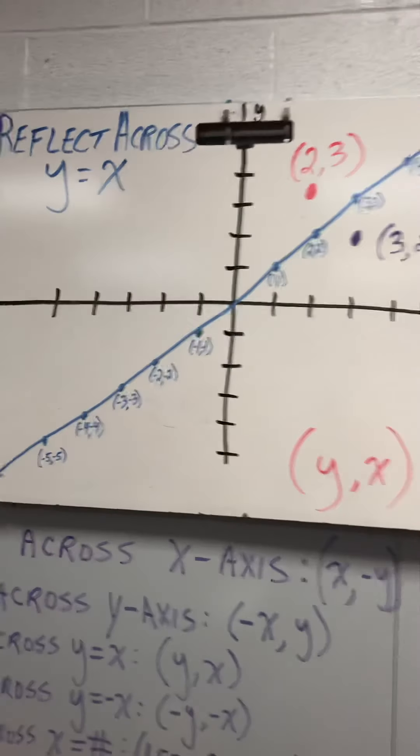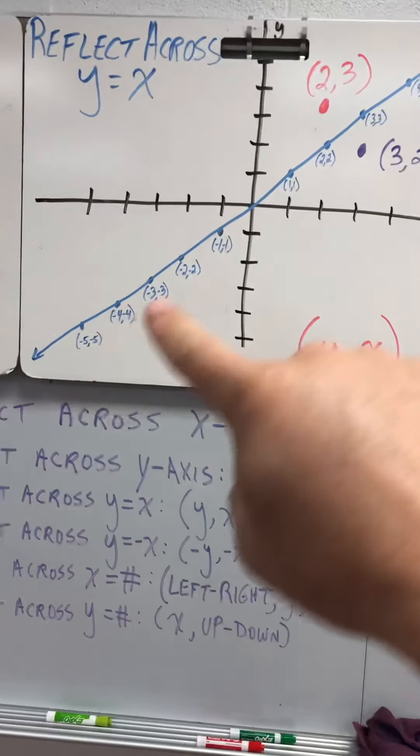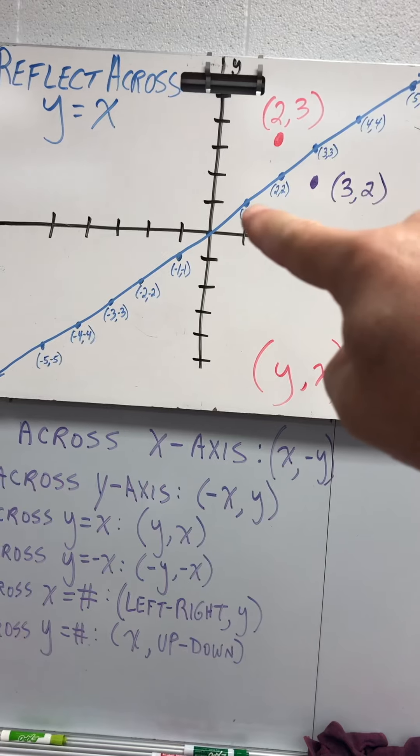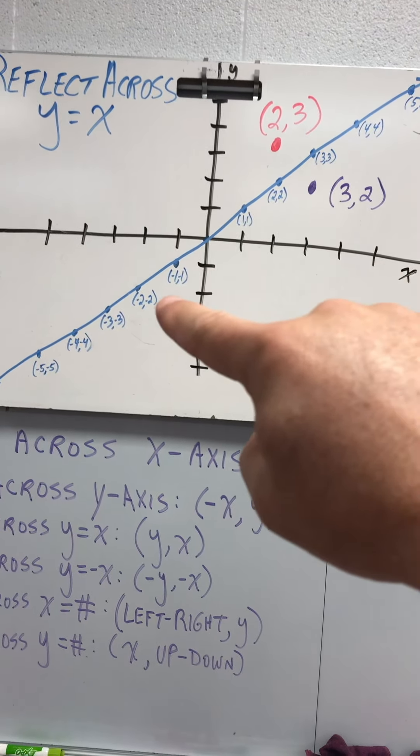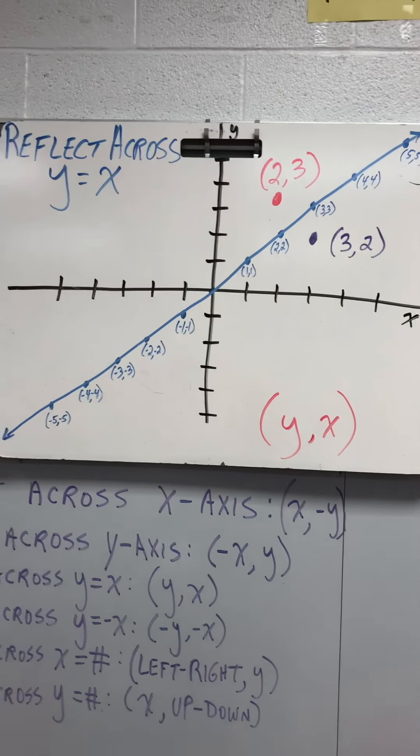To reflect across the line y equals x, here's the line y equals x. Why is that y equals x? Well, here's 1, 1, 2, 2, 3, 3, 4, 4, negative 1, negative 1, negative 2, negative 2, and so on. Okay, so that's the line y equals x.